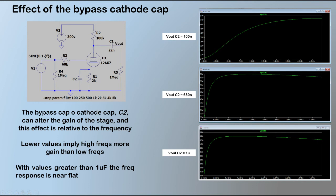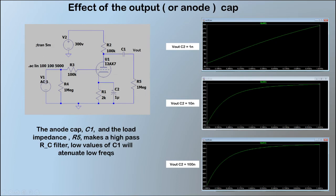The effect of the anode cap is very similar to the cathode cap. Higher values implies a more flat response. Lower values implies an attenuation of the bass frequencies. Standard values of this cap are 22 and 47 nanofarads.